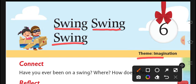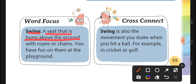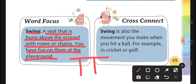The theme of this chapter is Imagination. The word for today is Swing. Swing means a seat that is hung above the ground with ropes or chains. You have fun on them at the playground. एक जूला होता है, प्लेग्राउंड में लटका हुआ होता है, यहाँ पे बच्चे बैठते हैं और Swing को enjoy करते हैं।